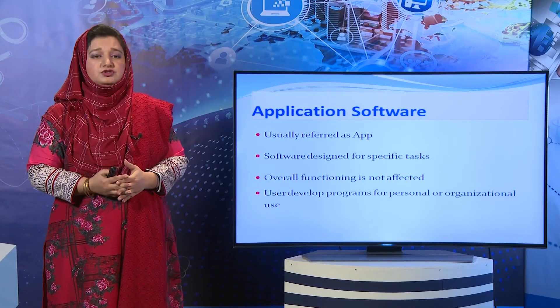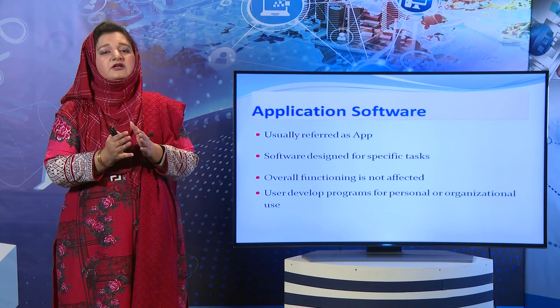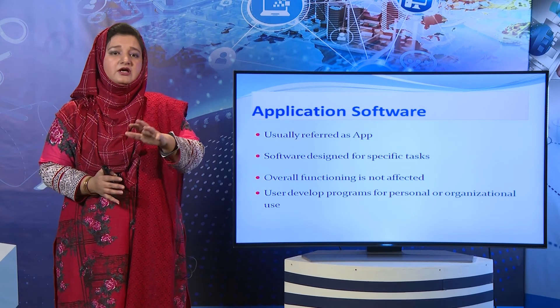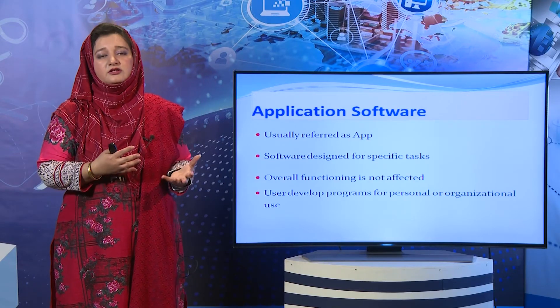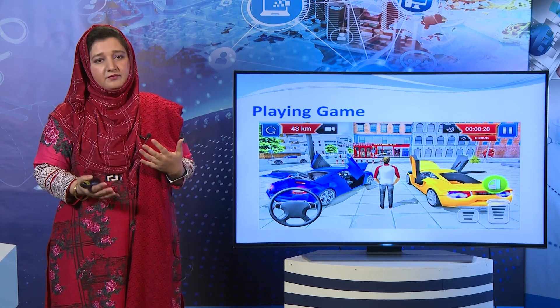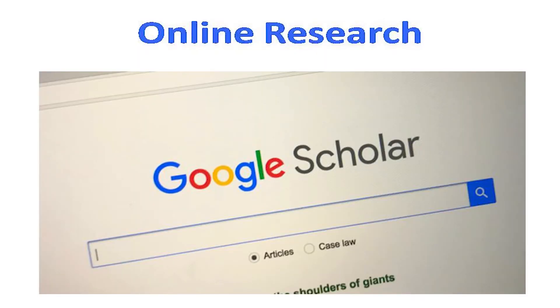Programmers different types کی apps بناتے ہیں — desktop، mobile، اور مختلف قسم کی apps. Overall functioning کے لحاظ سے application software ایک additional feature ہے جو آپ operating system کے ساتھ use کر سکتے ہیں. Users اور developers اپنے personal use یا organizational use کے لیے different apps develop کرتے ہیں. For example، different gaming apps ہیں جن سے ہم games کھیل سکتے ہیں — mobile phone پر، desktop پر، اور online بھی۔